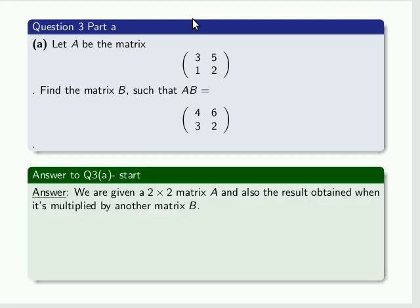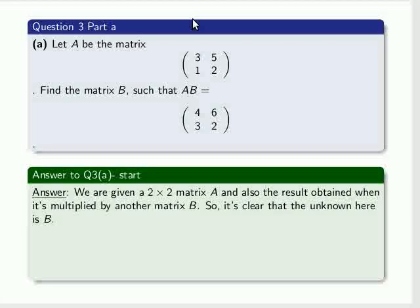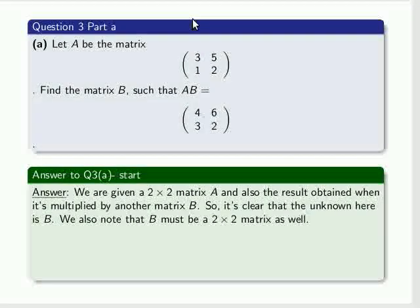So let's look at the answer. Well, because we're given matrix A and the result obtained when it's multiplied by another matrix B, it's clear that the unknown here is matrix B. We also note that B must be a 2 by 2 matrix as well.